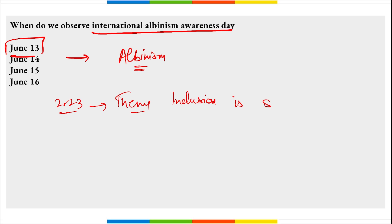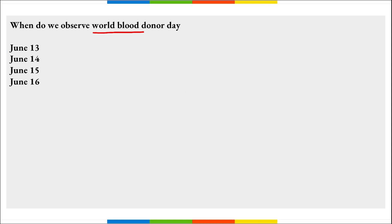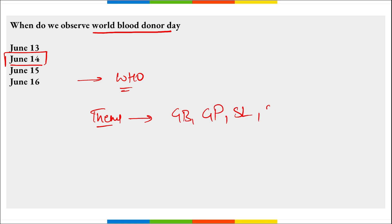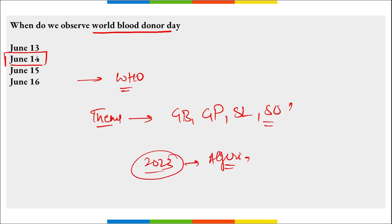World Blood Donor Day is observed on 14th of June to raise awareness about the significance of donating blood and to thank voluntary, unpaid blood donors for their life-saving gifts. The observance is by the WHO. The theme is 'Give Blood, Give Plasma, Share Life, Share Often.' For 2023, Algeria is the host country for this day.